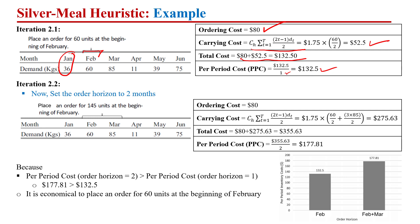Now we check against order horizon two — meaning at the start of February we meet the demand of February and March, placing an order equal to 145 (February plus March demand). The ordering cost is $80. The carrying cost using the formula is $275.63. The total cost divided by two gives the per period cost for a two-period planning horizon.